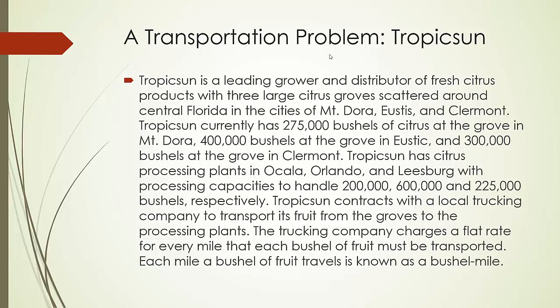Tropic Sun contracts with a local trucking company to transport its fruit from the groves to the processing plants. The trucking company charges a flat rate for every mile that each bushel of fruit must be transported. Each mile a bushel of fruit travels is known as a bushel mile.